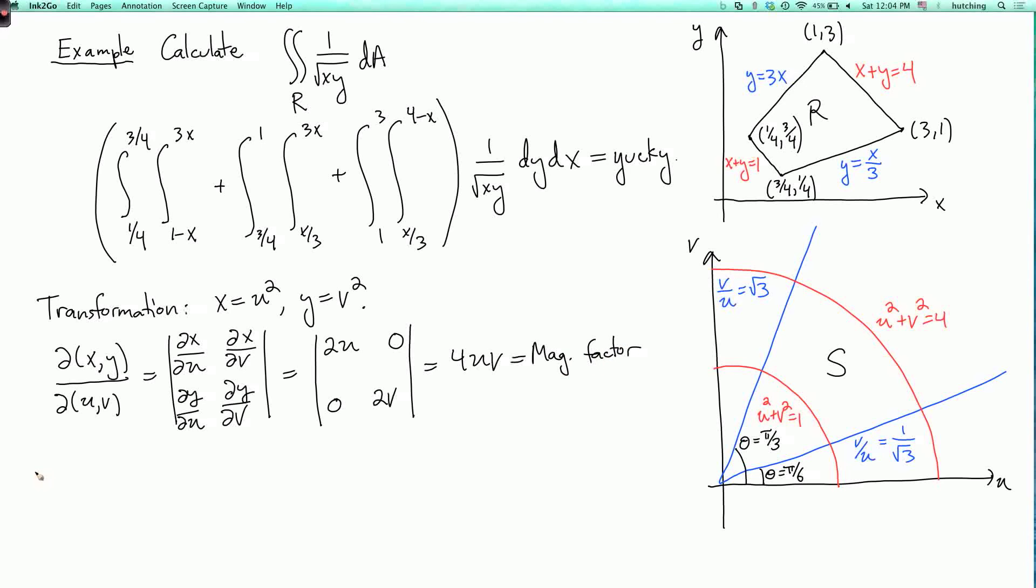Right, so we get that the double integral over r of 1 over square root of x, y, dA is the double integral over s. So first I have to take the function and rewrite it in terms of u and v. So this is now just 1 over u, v.